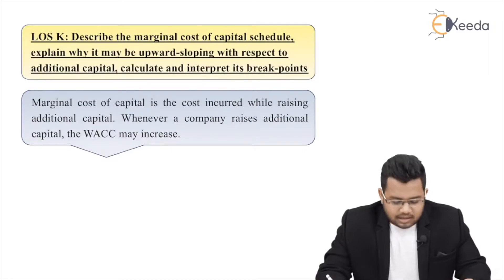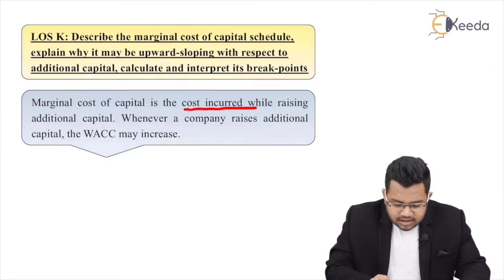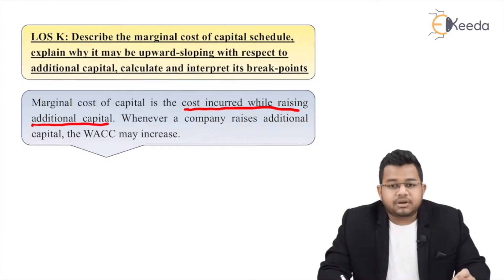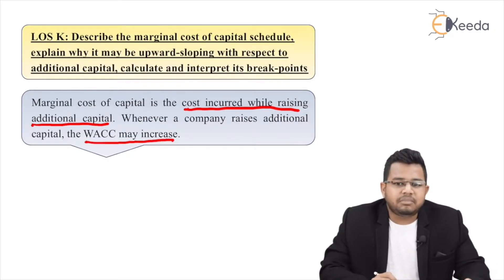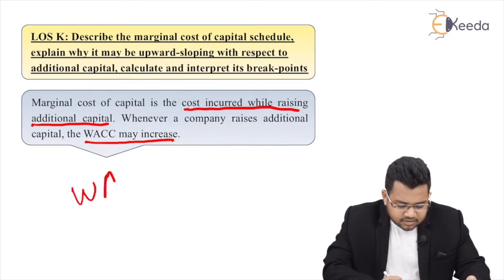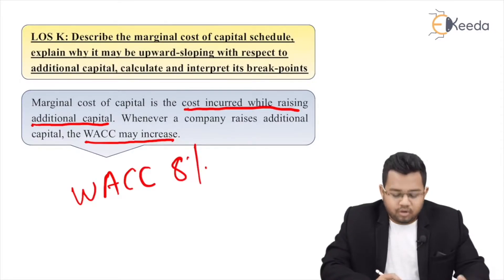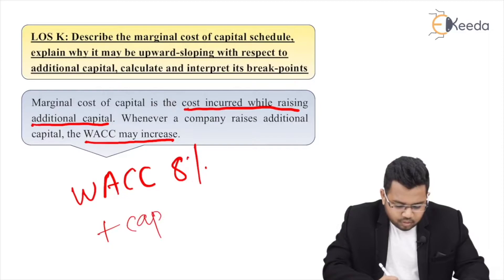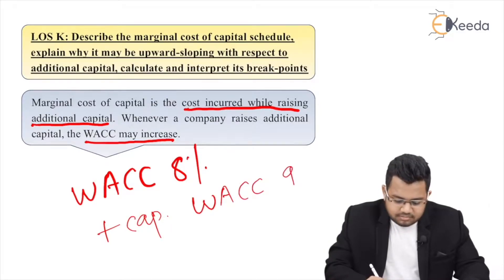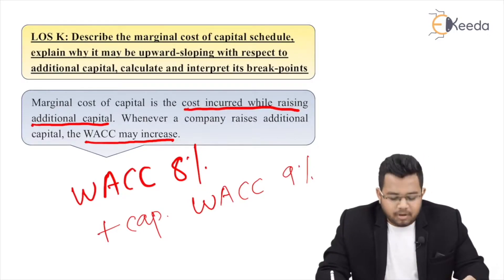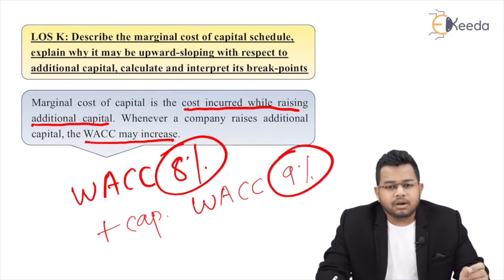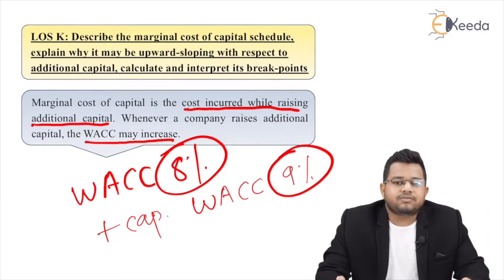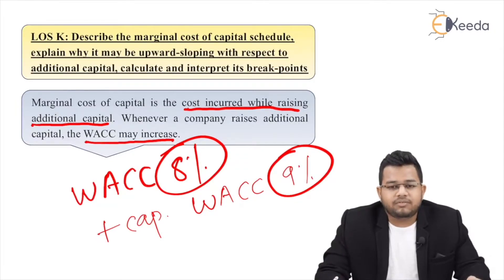What is marginal cost of capital? It is the cost incurred while raising additional capital. Whenever a company raises additional capital, the WACC may increase. Marginal means something additional. Normally, if my weighted average cost of capital is 8%, and I am raising more capital, then my WACC might increase to, say, 9%. Whenever you raise additional capital, extra cost would be incurred, and that marginal cost of capital will include that extra cost.